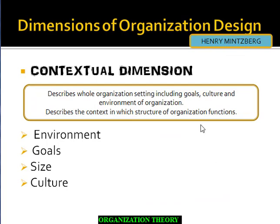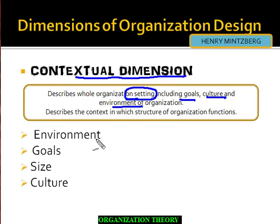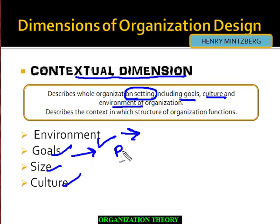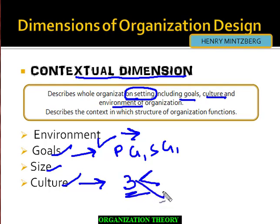Then comes contextual dimension. Contextual dimensions are particularly about the cultural dimension — how the organization setting is, the whole setting of the organization: goals, culture, and environment. Overall, contextual dimension is a wider term than culture alone. Environment, goals, size, and culture are all included. Environment is covered in a different video, goals are covered in another video discussing primary goals, secondary goals, goal distortion, goal displacement, etc. Culture has a whole series of three videos. Watch all those videos to get a clear understanding of contextual dimension.